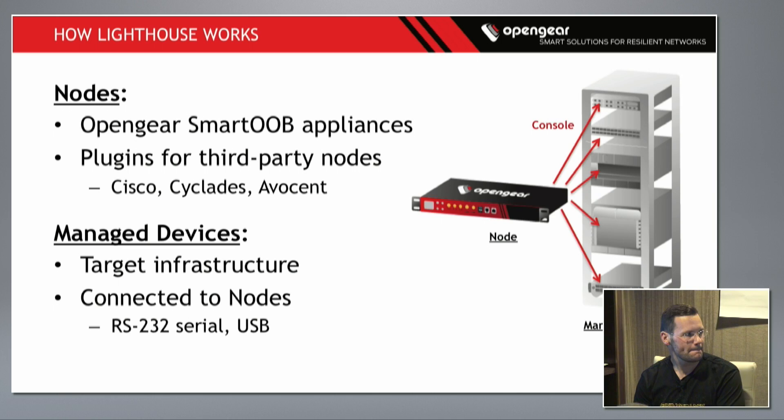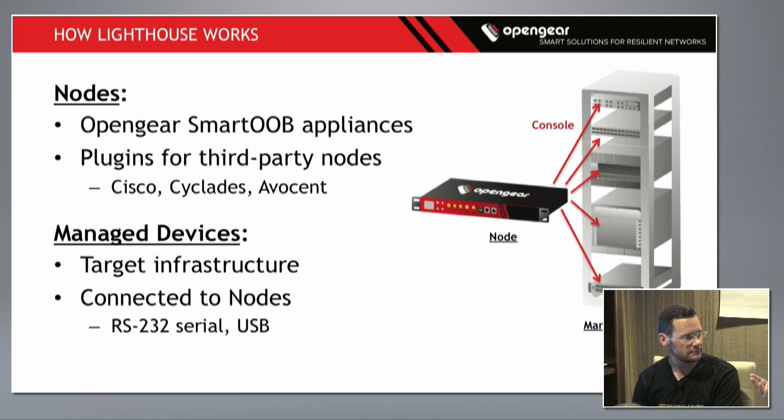You mentioned that communication between the nodes and Lighthouse happens via RESTful calls. How do you handle third party? Because they're not going to be doing the same. They do behave quite differently. When you enroll a node with Lighthouse, it brings up a northbound Lighthouse VPN — which is an OpenVPN connection — and then Lighthouse does all the management over that VPN using RESTful calls.